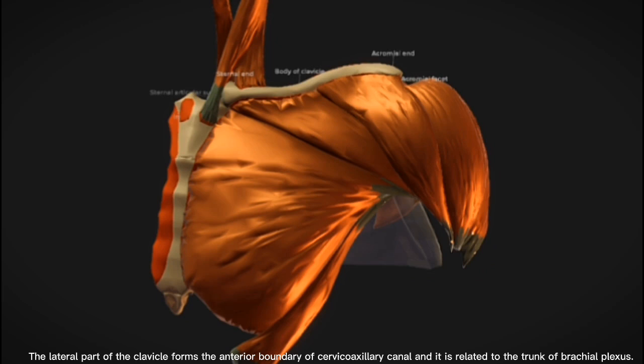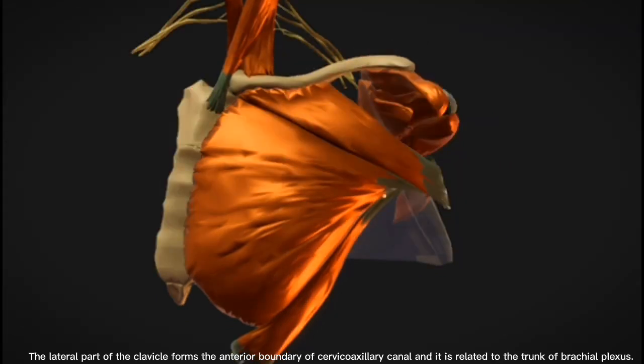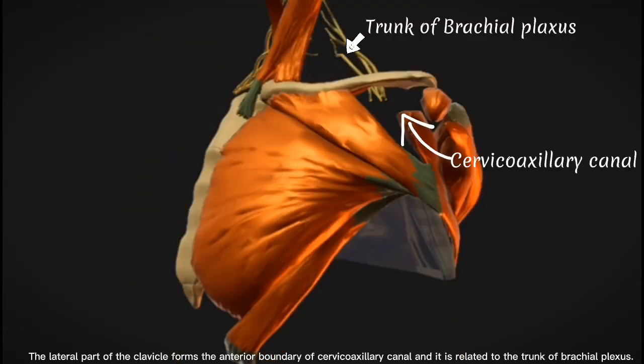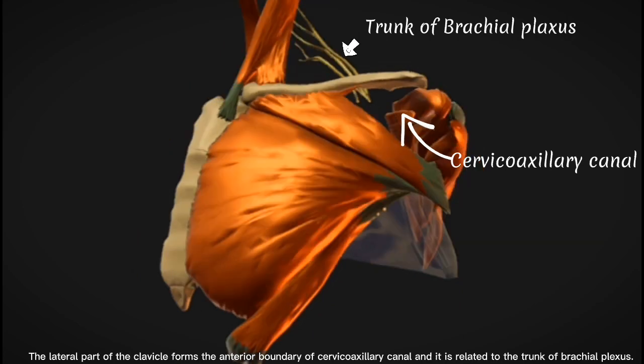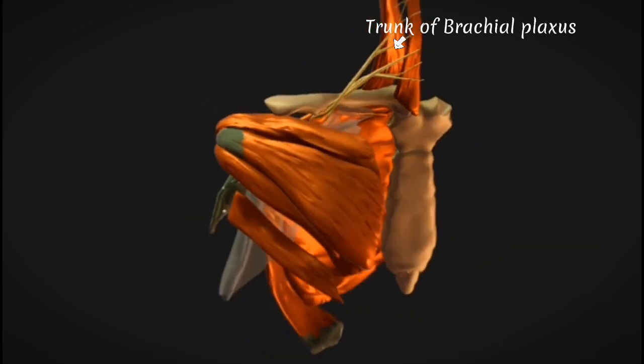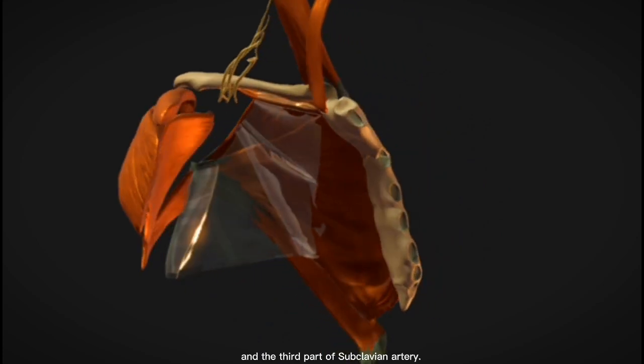The lateral part of the clavicle forms the anterior boundary of cervicoaxillary canal, and it is related to the trunk of brachial plexus and the third part of subclavian artery.